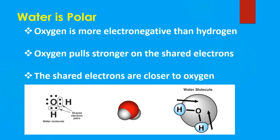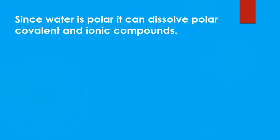Remember, what is a polar substance? Because oxygen is more electronegative than hydrogen, the electrons that are shared are not shared evenly. Oxygen has a stronger pull on these electrons, so the shared electrons lie closer to oxygen, giving oxygen a slight negative charge and hydrogen a slight positive charge. Because water is polar, it will dissolve substances that are like it — so polar covalent compounds and ionic compounds will dissolve in water.